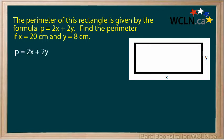Step 1: Write down the formula — P equals 2x plus 2y. Step 2: Substitute the values for x and y. x is 20 and y is 8.